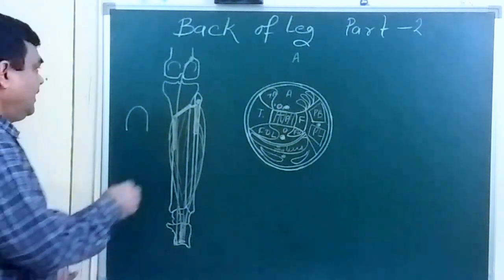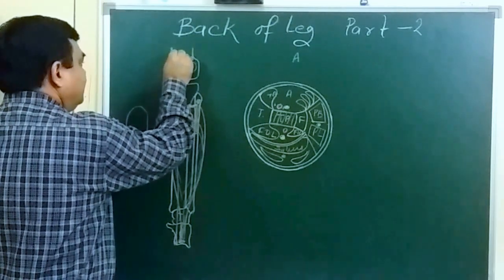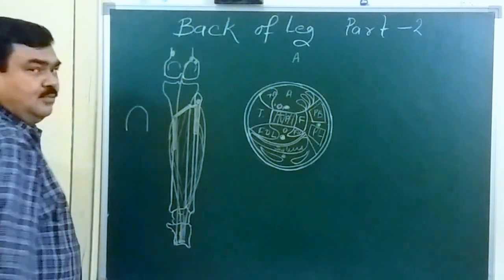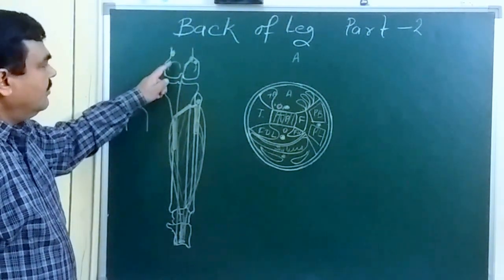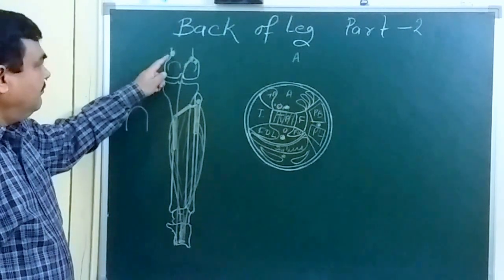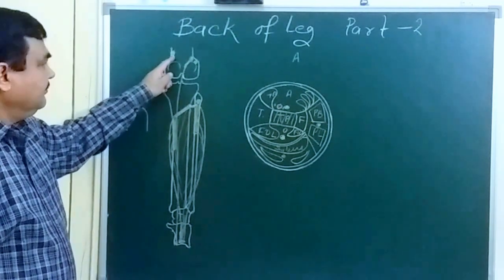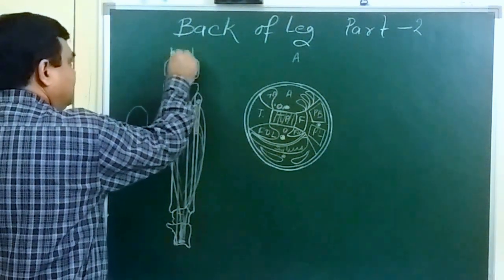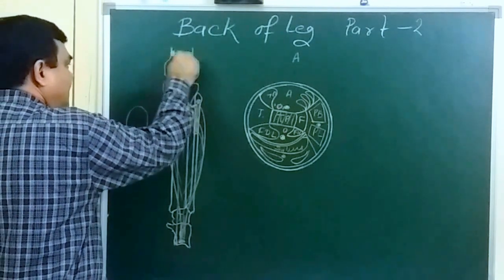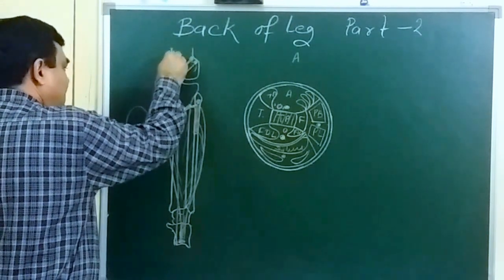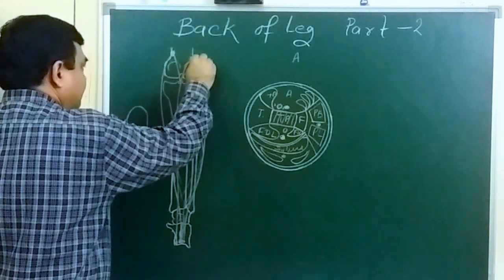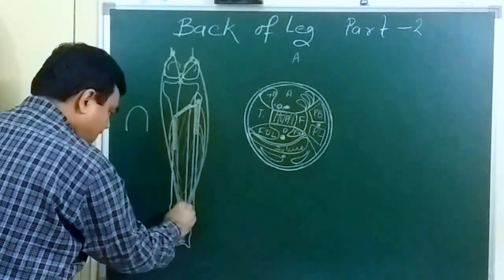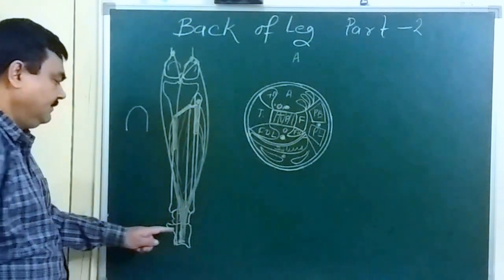The gastrocnemius has two heads — this is the lateral head and this is the medial head. The medial head takes origin from the superior medial part of the medial condyle of the femur, and the lateral head takes origin from the lateral condyle. These two muscle bellies join with the tendon of the soleus.